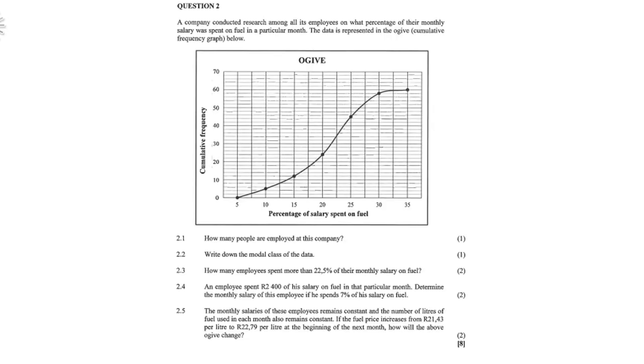This is question 2, still part of statistics. A company conducted research among all its employees on what percentage of their monthly salary was spent on fuel in a particular month. This data is represented in the OGIVE, and we also call it a Cumulative Frequency Graph below. So have a good look at the graph. Percentage of salary spent on fuel is on the horizontal axis and the cumulative frequency is on the vertical axis.